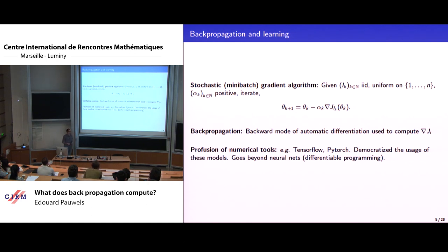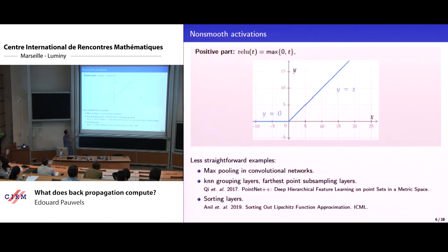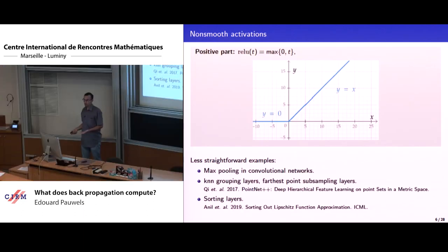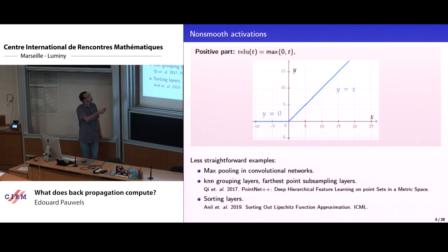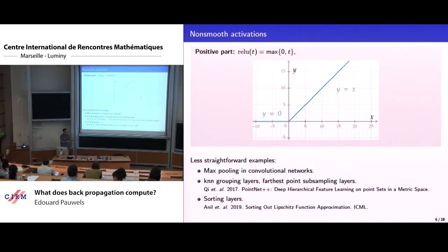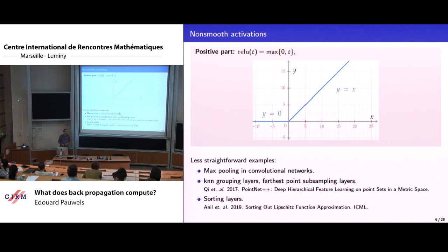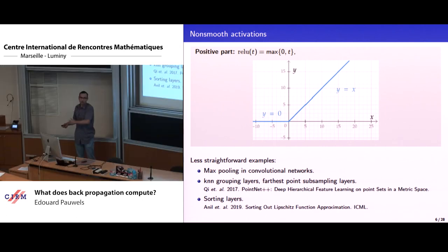Differentiable programming may refer to objects which are not differentiable — that's the power of naming. Many practitioners use non-smooth activation functions, so the non-linear part connecting two consecutive layers is not smooth. The most famous example is relu, also known as positive part — it's not differentiable at zero. Although the non-differentiability looks straightforward here as it's a convex function, there are more complicated examples including max pooling in convolutional networks and even sorting layers.